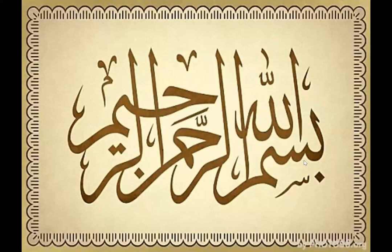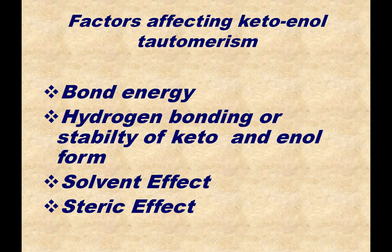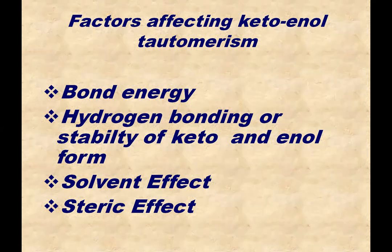Bismillahirrahmanirrahim. As-salamu alaykum, dear students. I hope all of you are fine at home. We have studied about tautomerism in our previous lecture and I think all of you are clear about tautomerism. Tautomers are two isomers which differ in the relative position of an atom, mostly hydrogen atom, and with the corresponding adjustment of double bond. The most favorite example of tautomerism is keto-enol tautomerism.